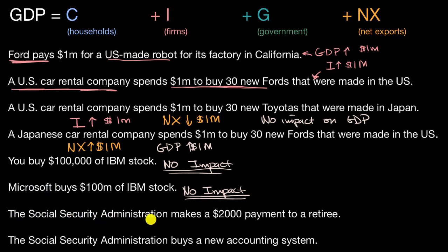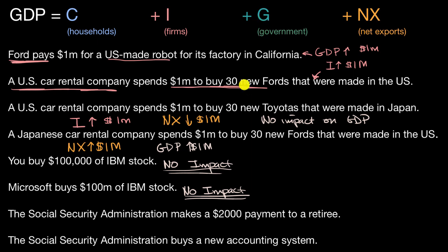All right, this next one: the Social Security Administration makes a $2,000 payment to a retiree. You might be tempted to say that's a government expenditure, but we have to remind ourselves — the G category is government expenditure on goods and services, not a transfer payment like this. So this would have no impact on GDP. Nothing new is being produced in the United States because of this payment.